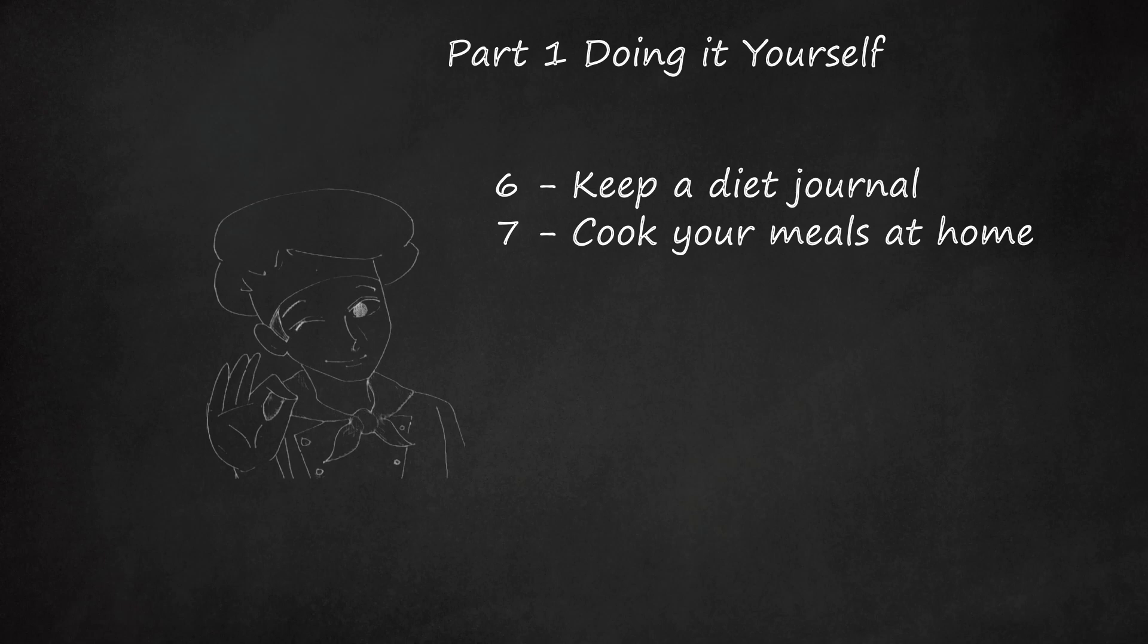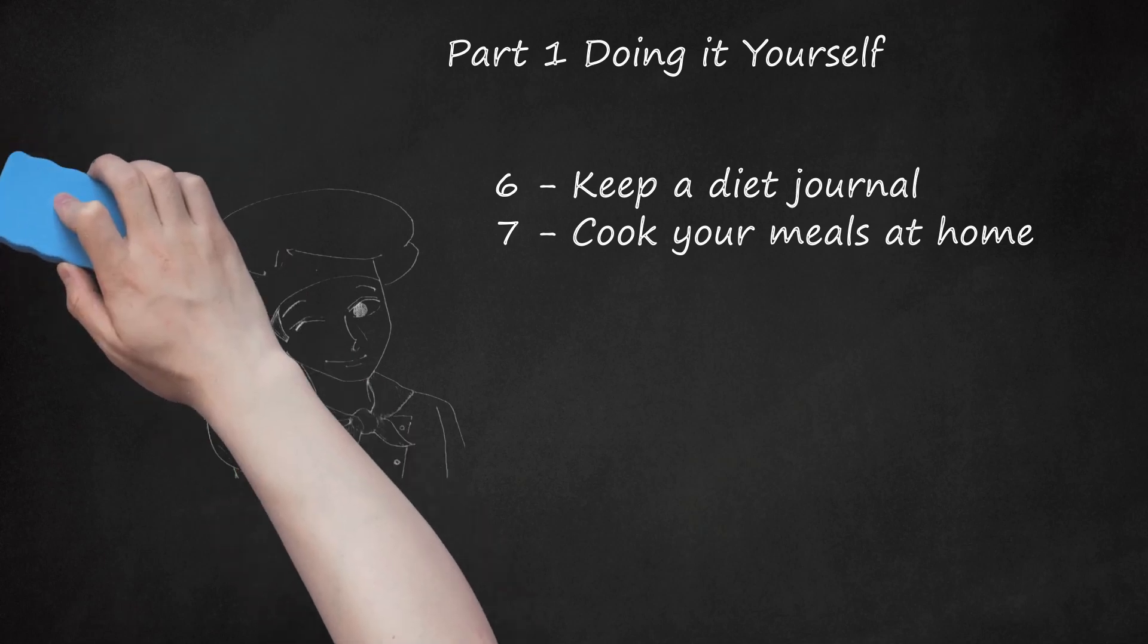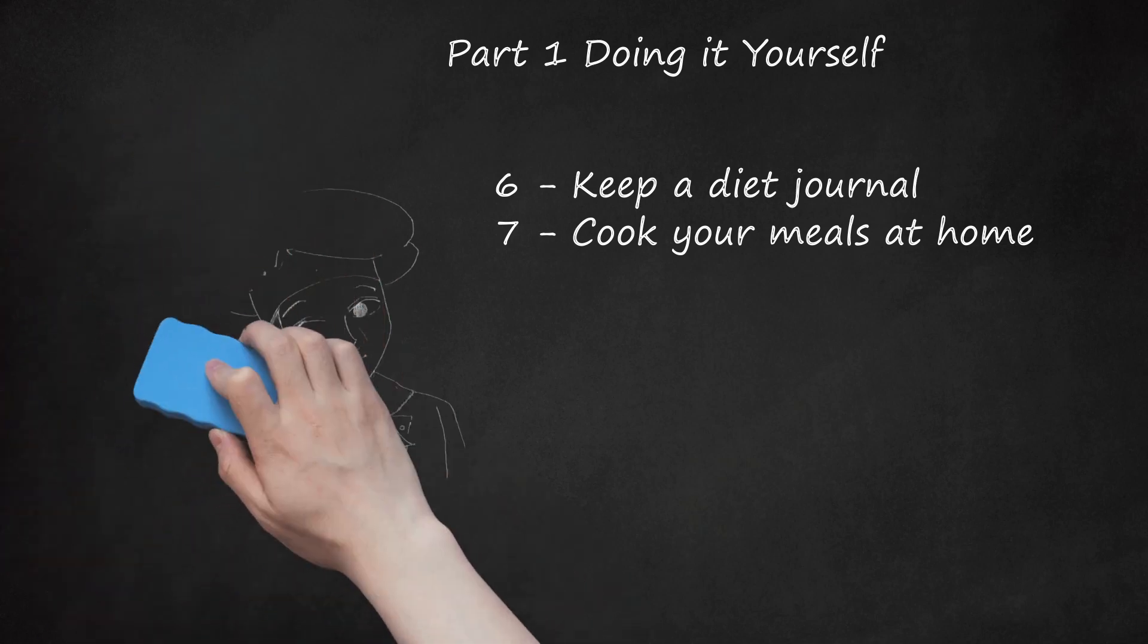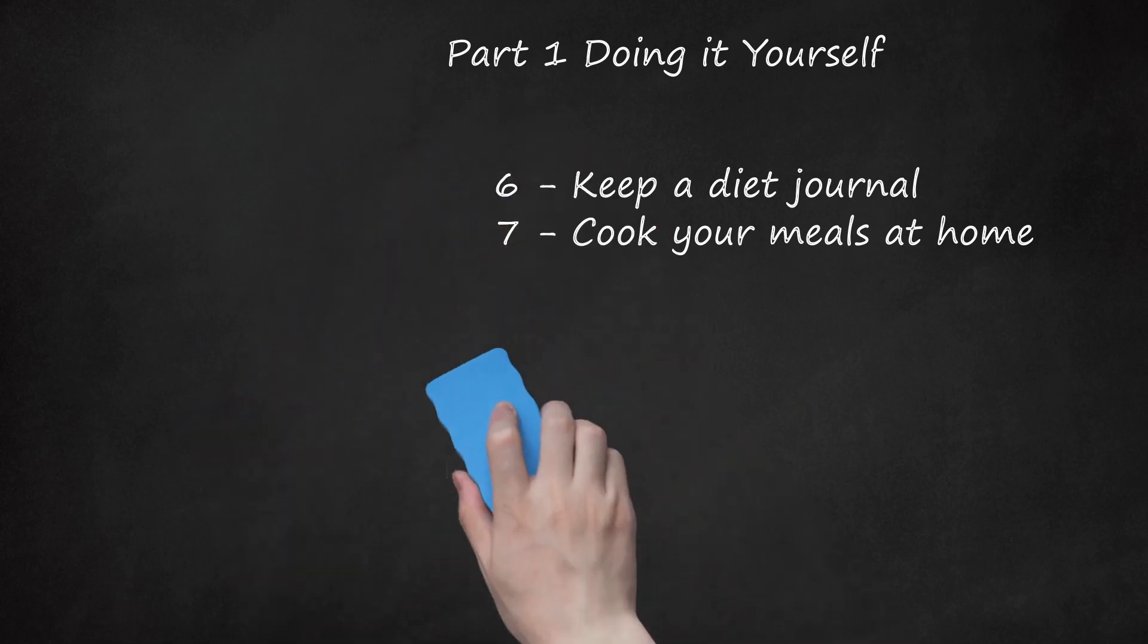When you do eat out, you can cut down on calories by asking for sauces and dressings on the side. Use cooking sprays rather than olive oil or butter when cooking at home. If you do use olive oil to cook, be sure to measure out how much you are using as one tablespoon contains more than 100 calories. Pack a healthy lunch and bring it with you to work or school, and be sure to include healthy snacks like carrots, celery, and apples to keep you satisfied in between meals.